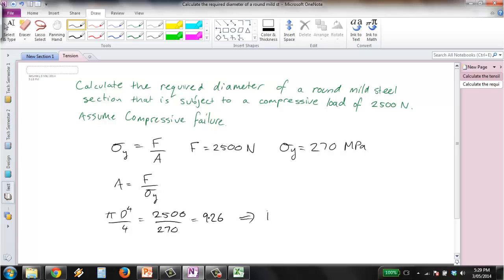And this gives us a D squared value just by moving our 4 and pi. It should be D squared up on there. So D squared value of 11.79, so just take the square root of that, and we get D equal to 3.43 millimeters.